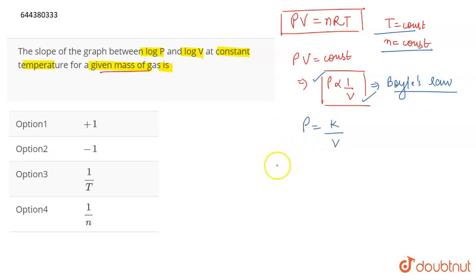Now, if I take log on both sides, this will become log P is equal to log of K by V. Now, there is a property of log. If you have something like log A by B, this will be written as log A minus log B.